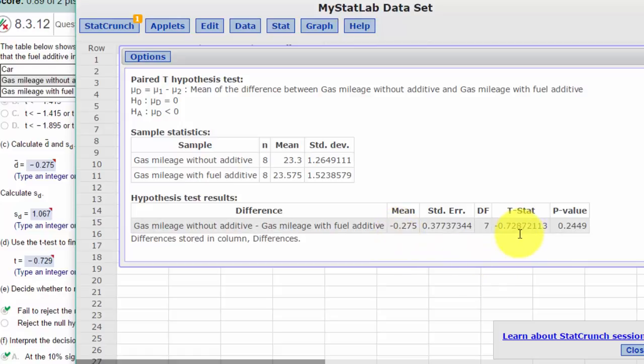Okay, our p-value is 0.2449, and that tells us that we fail to reject the null hypothesis, because the p-value is much larger than the alpha of 0.01. And we can also see that our T stat of minus 0.729 does not fall into the rejection area.